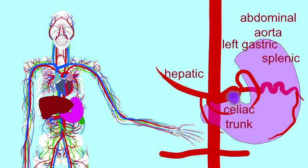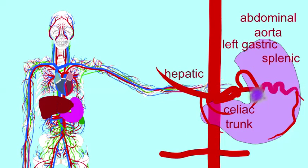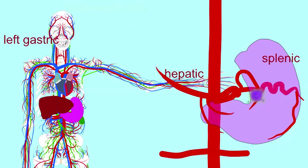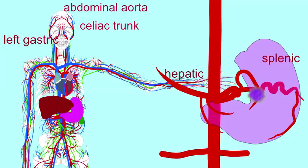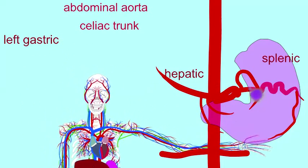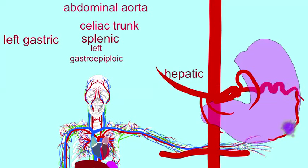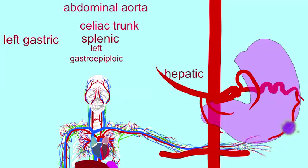For example, if I was sending blood to the lesser curvature of the stomach, it would pass through the left gastric artery. If I wanted to send blood to the greater curvature of the stomach on the lateral side, I could send blood through the splenic artery, which would then form a branch known as the gastroepiploic artery, which would reach the greater curvature of the stomach.